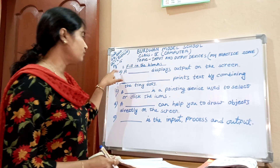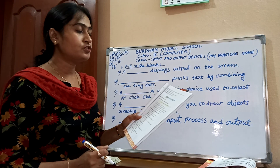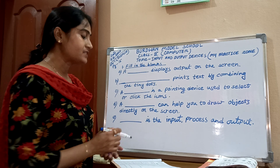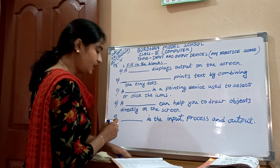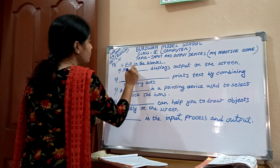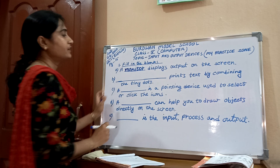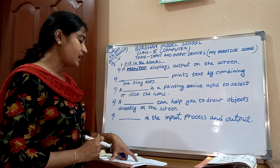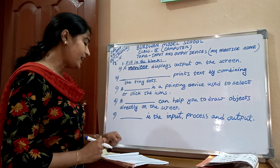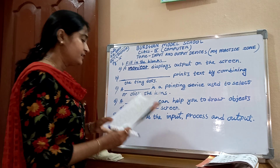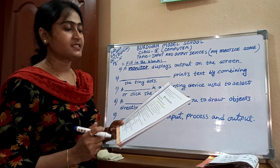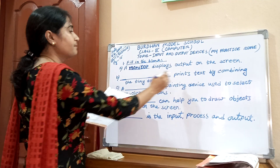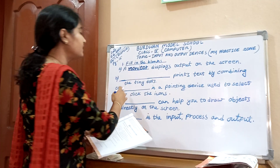Number 1A: A dash displays output on the screen. Which displays output on the screen? A monitor. Number 1A: A dash prints text by combining the tiny dots.